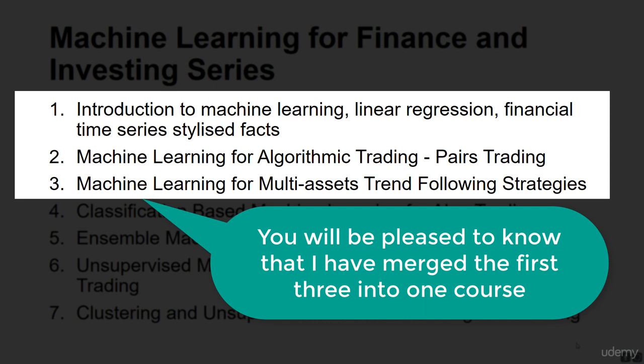The second in the series is machine learning for algorithmic trading — in particular, pairs trading. I'll be using linear regression to start with, followed by penalized regression techniques such as ridge, lasso, elastic net regression, as well as a state space model, which is the Kalman filter with particle filter.